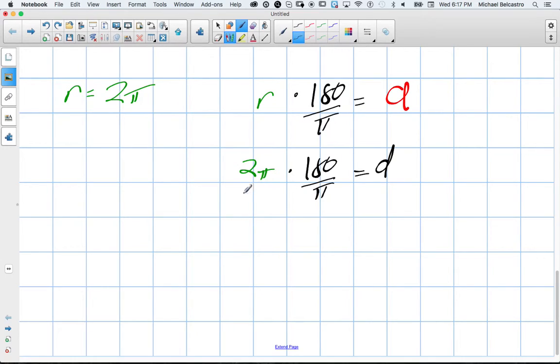Because of this multiplication, we can put this all over π. And now π divided by π, they cancel out. Now we're just looking at 2 times 180. Well, 2 times 180 is 360. That's true. 2π is equivalent to 360 degrees.